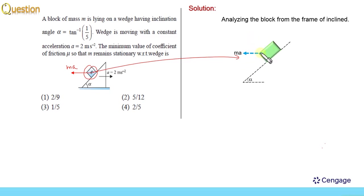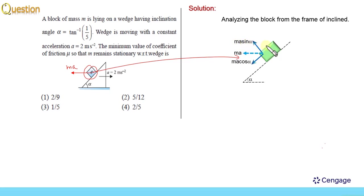The component of the pseudo force parallel to the inclined surface is m·a·cos α, and perpendicular to the inclined surface is m·a·sin α. The component of the weight perpendicular to the inclined surface is m·g·cos α, and parallel is m·g·sin α.